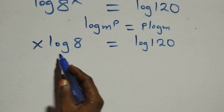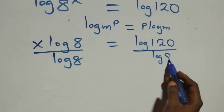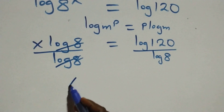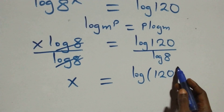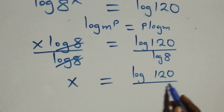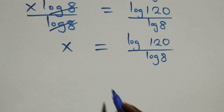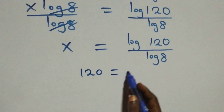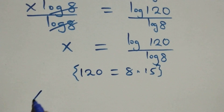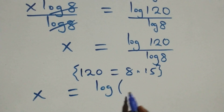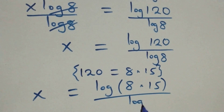The next step: we divide both sides by log 8. Log 8 cancels on the left, and we are left with x equals log 120 over log 8. From here, we can express 120 as 8 times 15, so what we have becomes x equals log(8 times 15) divided by log 8.